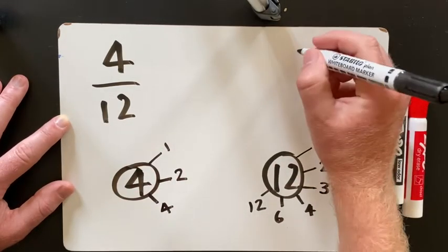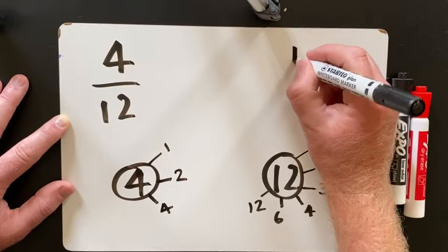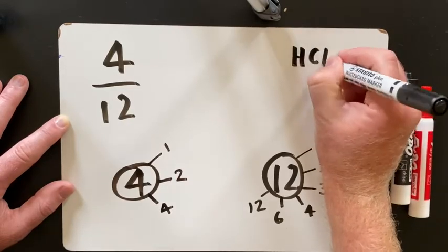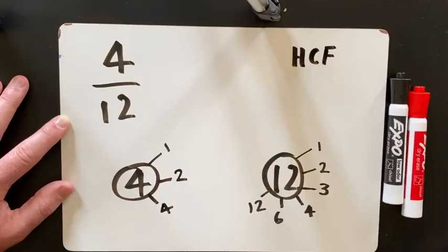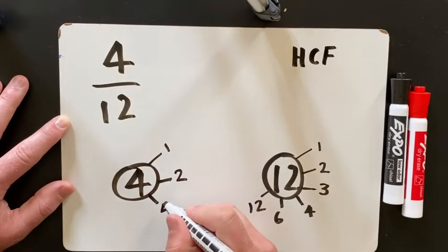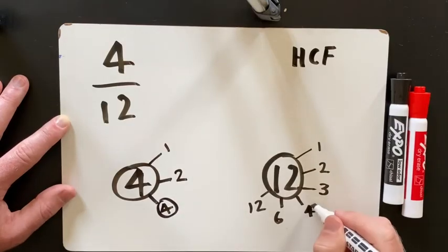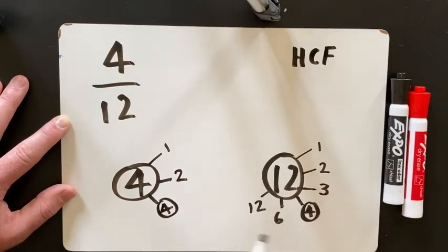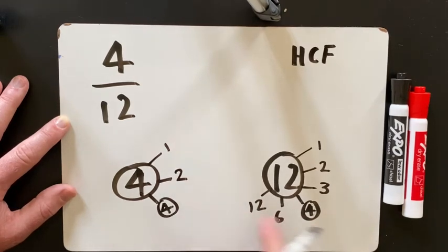Now I must find the highest common factor. So basically, all that means is I take a look at both lists and I find the highest number that is in both of the lists. So in both lists, the highest number is 4, so the highest common factor is 4.